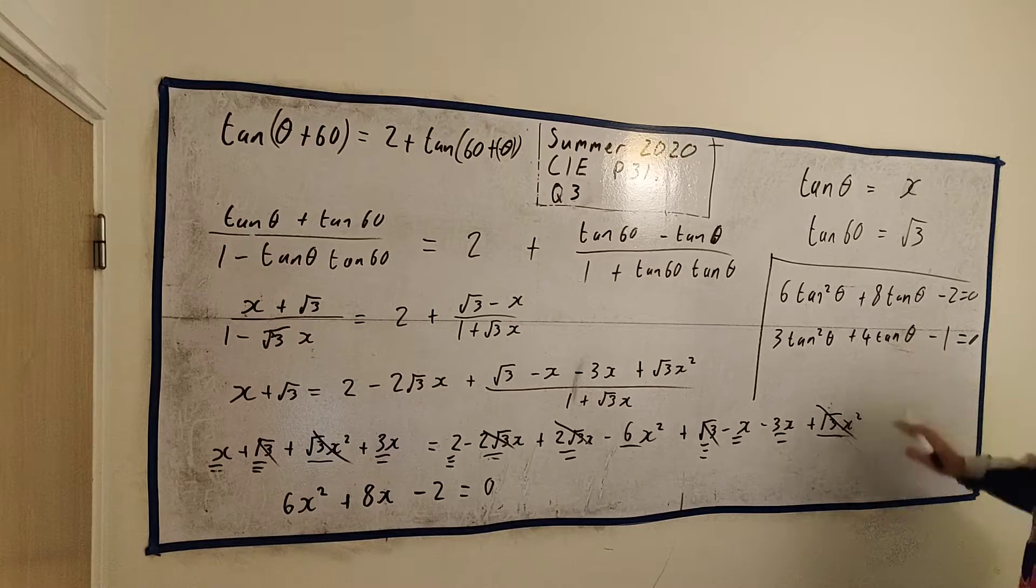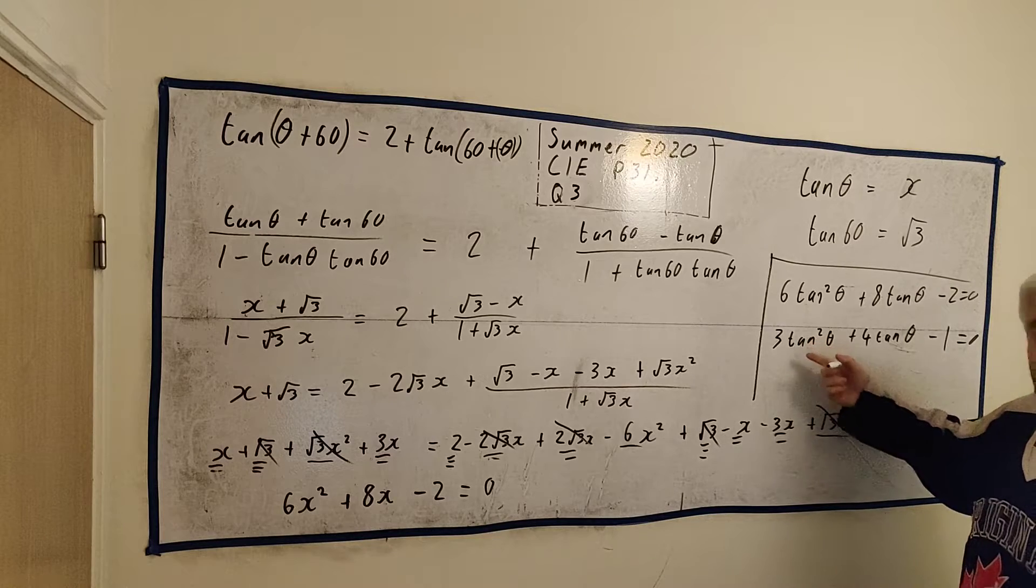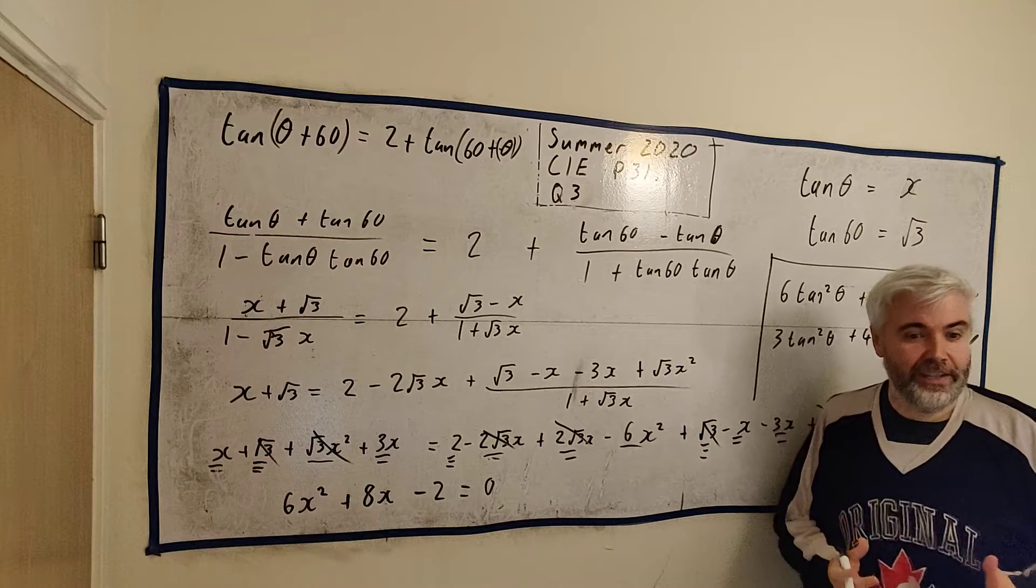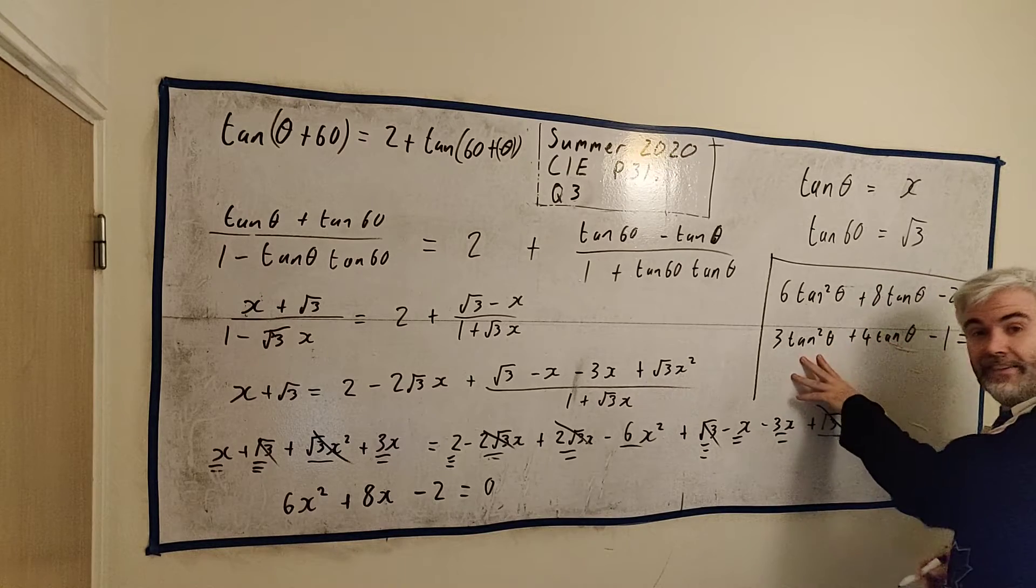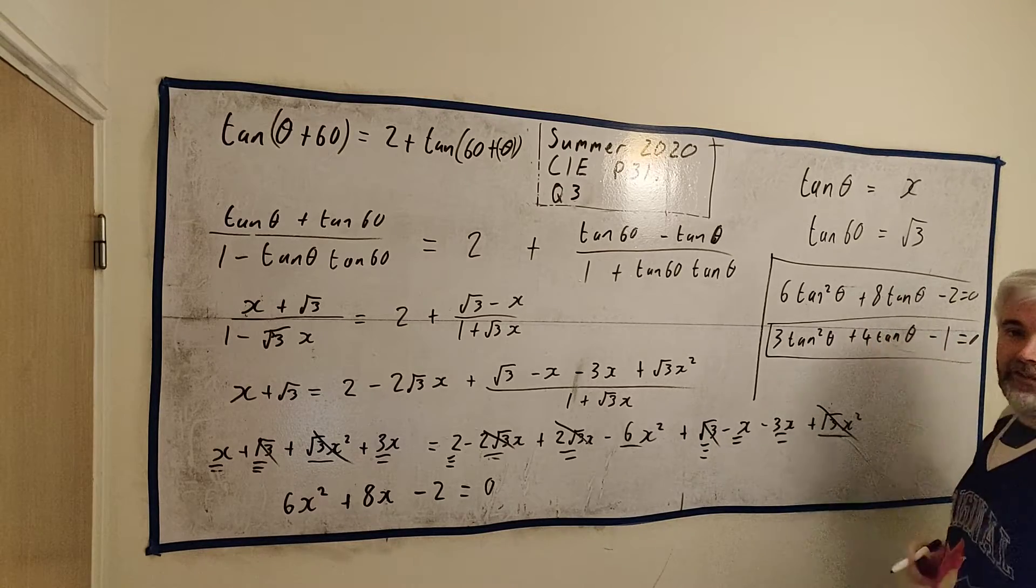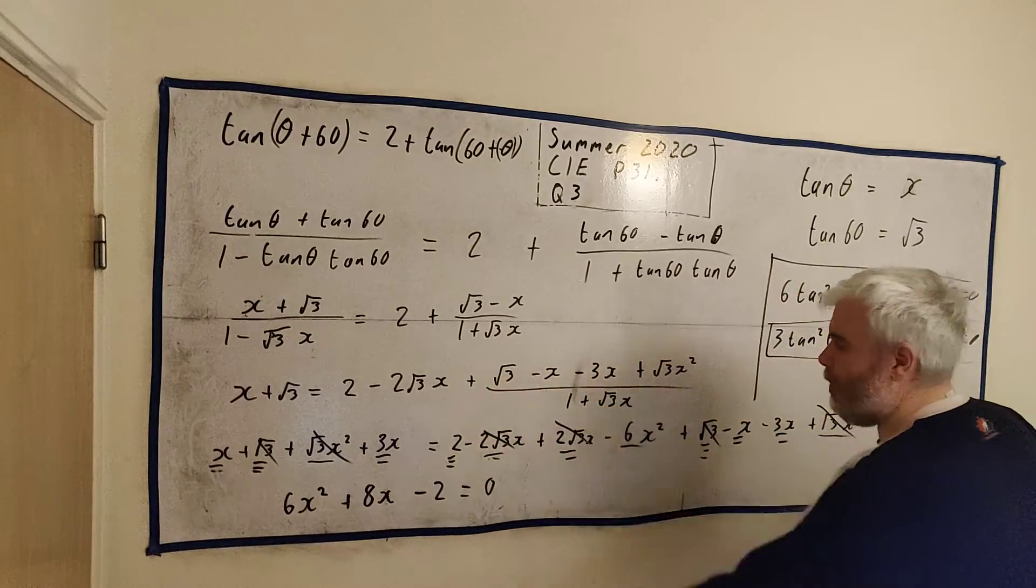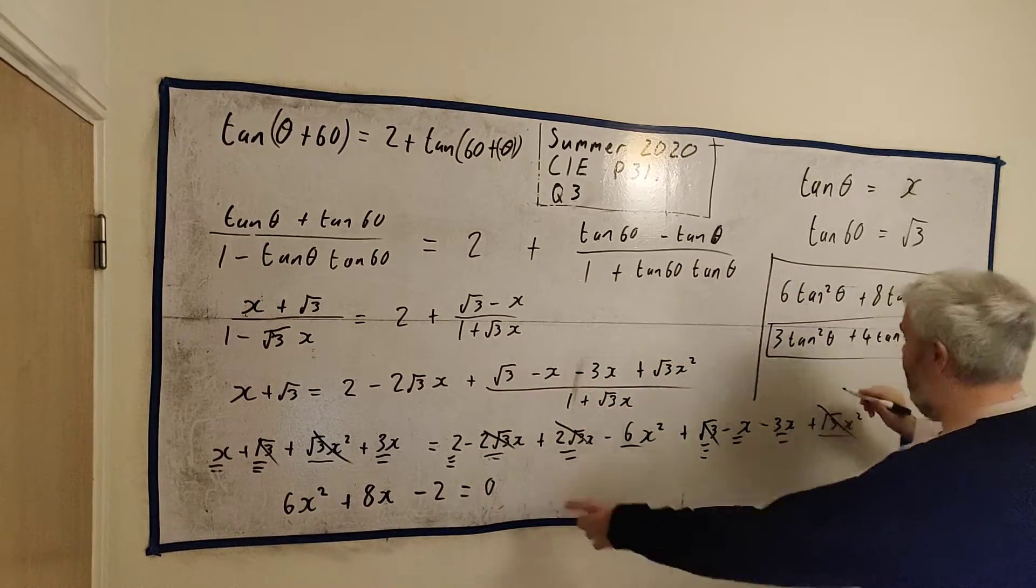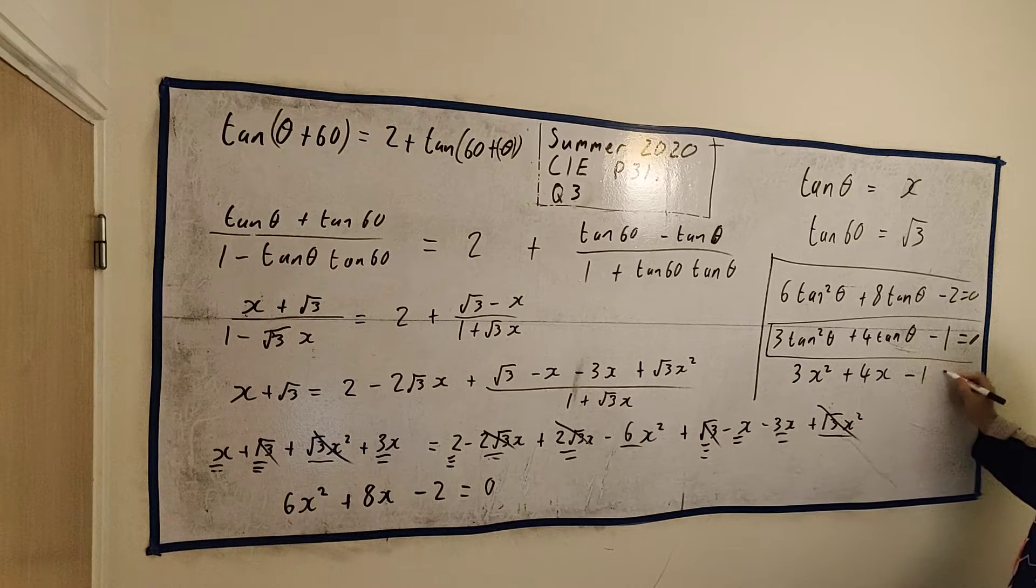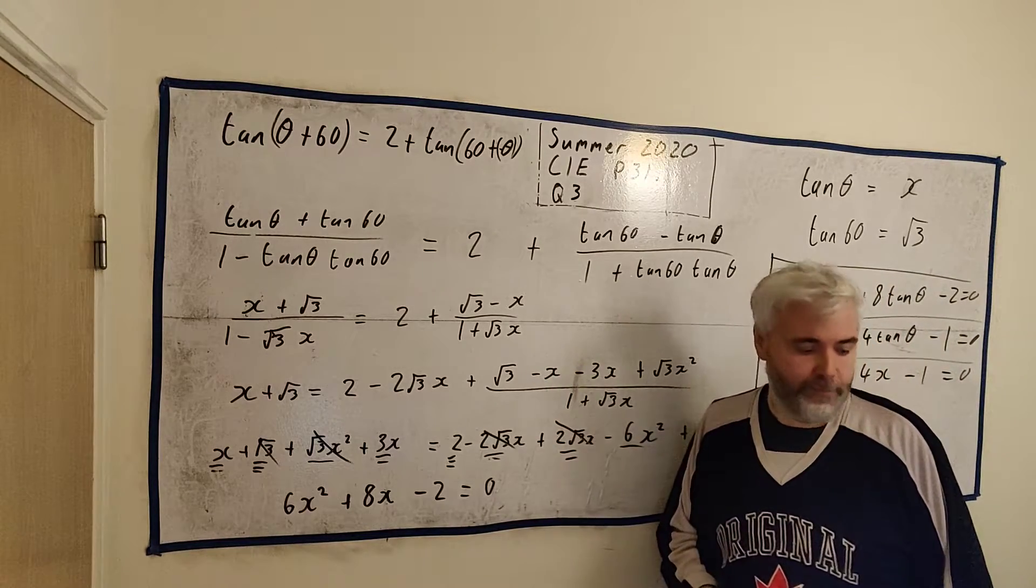Now we just have to solve that. It's going to be easier just to keep the X's instead of using the tans. We'll turn it back into tan at the very end. I just did it here because they did ask for the quadratic expression in tan θ. So they would probably take one mark, maybe half a mark away for not giving them that, even if you answer the rest of the question fine. I'm going to rub this out just so I have a bit of room. Let's keep this line here. 3x² + 4x - 1 = 0.